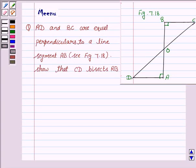Hi and welcome to the session. Let's discuss the following question. It says AD and BC are equal perpendiculars to a line segment AB. Show that CD bisects AB.